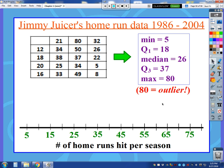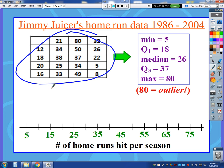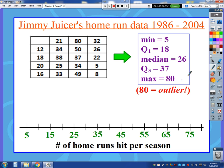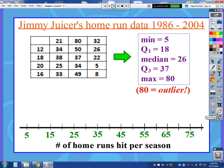Now I want to show you an example of a data set where there is an outlier and how that changes things slightly. I've got a fictitious character, Jimmy Juicer — he likes steroids. Here's his home run data from 1986 to 2004. I put this data into a list, did one-variable statistics, and came up with the five-number summary. After applying the 1.5 IQR rule check for outliers, I found that 80 is an outlier.